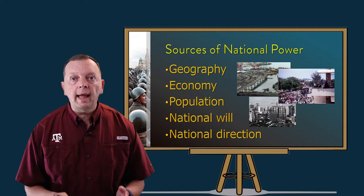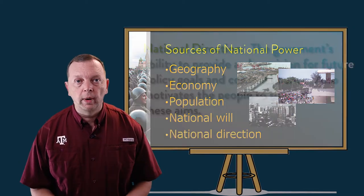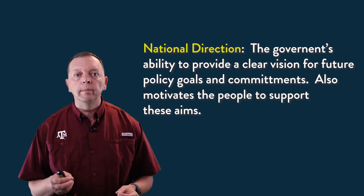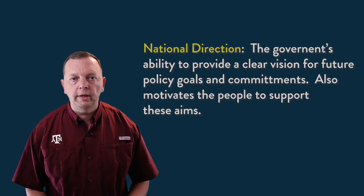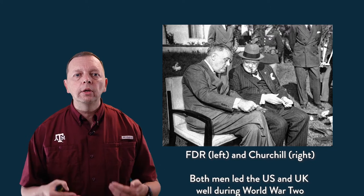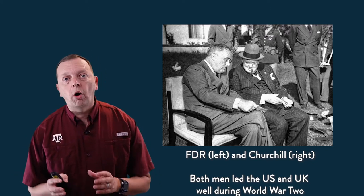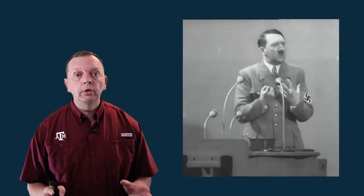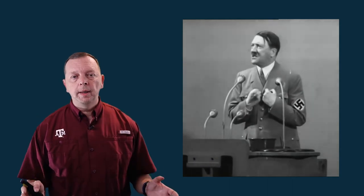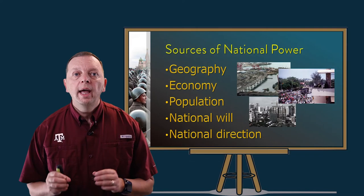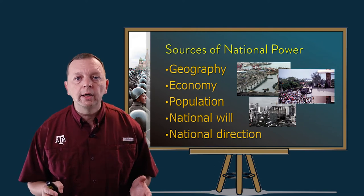The will of the people can be influenced by our last source of national power: national direction. National direction refers to the government's ability to provide a clear vision for future policy goals and commitments, as well as getting the people to support its aims. World War II has great examples of this — America's Franklin Delano Roosevelt clearly articulated the reason why we had to continue to fight against Germany and Japan, harnessing the efforts of the entire country. Likewise, Adolf Hitler used his charisma to galvanize the people of Germany behind his ruinous objectives of conquering all of Europe. Whether for good or for evil, a leader that can impart national direction becomes a great strength for that nation.